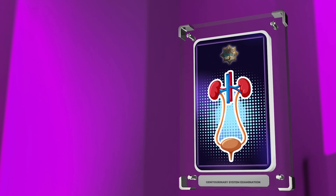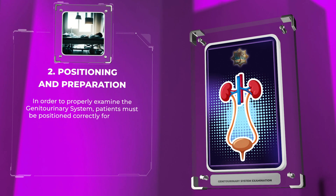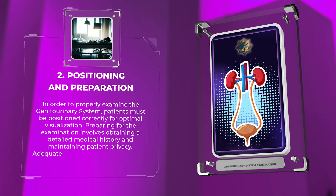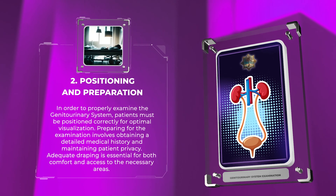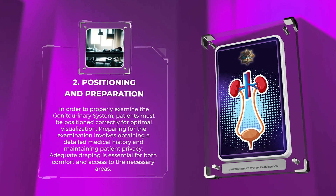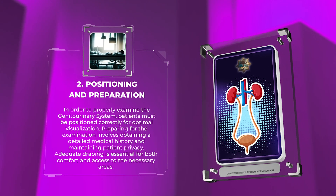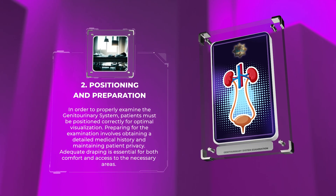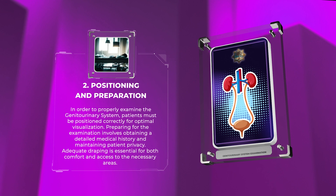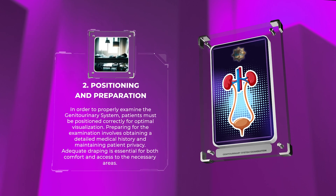In order to properly examine the genitourinary system, patients must be positioned correctly for optimal visualization. Preparing for the examination involves obtaining a detailed medical history and maintaining patient privacy. Adequate draping is essential for both comfort and access to the necessary areas.